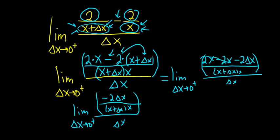All right, so we have this fraction over delta x. So let's write the limit again. Limit delta x goes to 0 from the right. So when you have this fraction and you divide by delta x, you really multiply by the reciprocal of delta x.